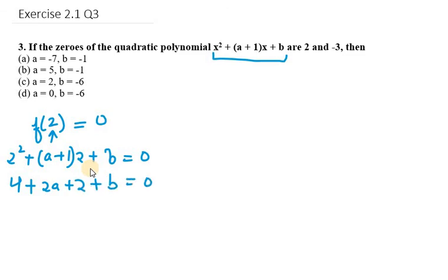So 4 plus 2 is 6. 6 + 2a + b = 0. So what we get is 2a + b = -6.